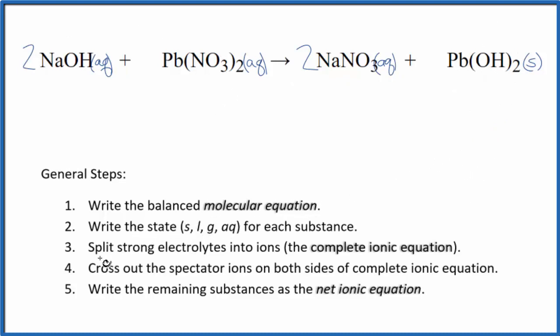Now we have the states. We can split the strong electrolytes into their ions. That'll give us the complete ionic equation. So sodium's in group 1, 1 plus ionic charge. The hydroxide, always 1 minus. Two sodium ions and two hydroxide ions. And I won't write the states now. Let's do that at the end.